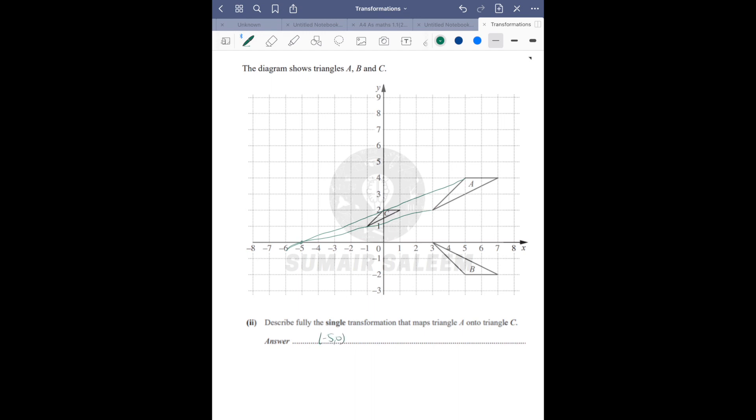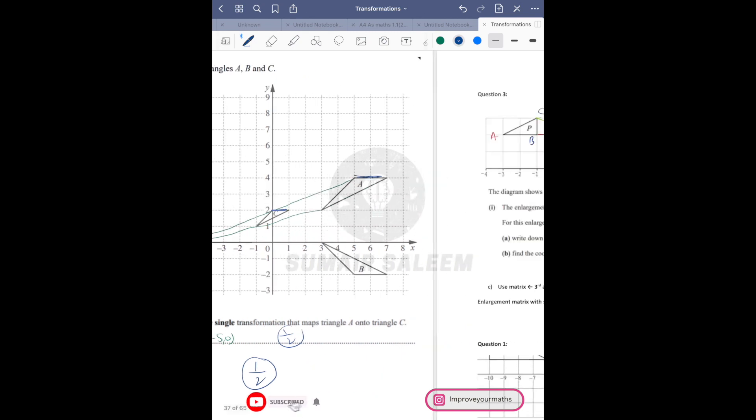So center point is minus 5,0 and scale factor is image upon object. Image is 1, object is 2, so image upon object is 1 upon 2. This transformation is enlargement with center minus 5,0 and enlargement factor 1 upon 2. Did you get till this point?